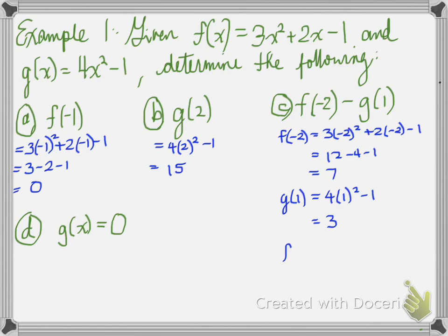Now did you have to write them separately? You could have as shown here. And you write them together. f at negative 2 minus g at 1 is equal to 7 minus 3 which equals 4. So again, we found out f at negative 2, we plugged it in, found the value. g at 1, plugged it in, found the value. Then we took the two values and subtracted them to get the answer.